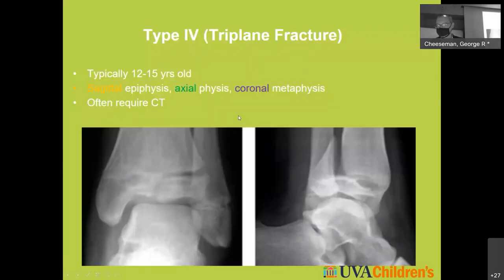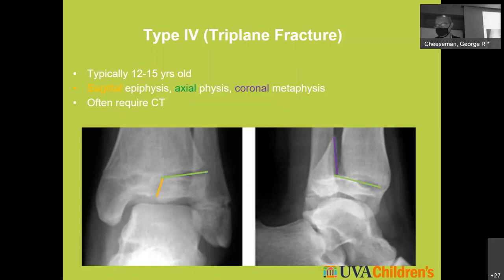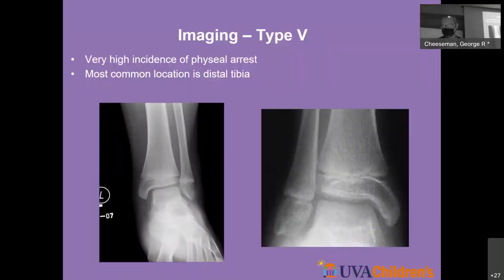A specific Salter-Harris 4-type fracture is the triplane fracture. By definition, a triplane fracture is a Salter-Harris 4 fracture: a sagittal fracture through the epiphysis, an axial fracture through the physis, and a coronally-oriented fracture through the metaphysis. This has implications for leg length discrepancies and premature osteoarthritis, so they often need a CT — orthopedics uses different measurements to decide whether to take the patient to the OR, often related to step-off greater than 2 millimeters.